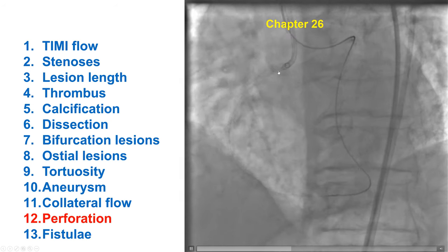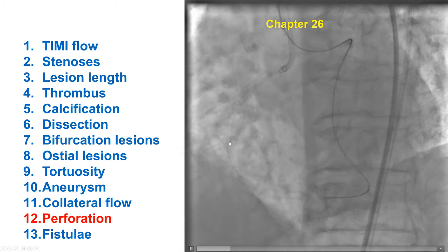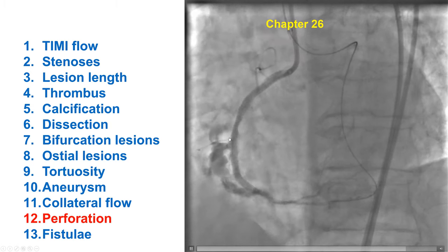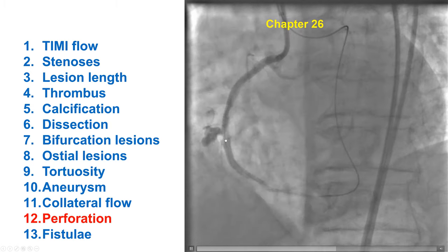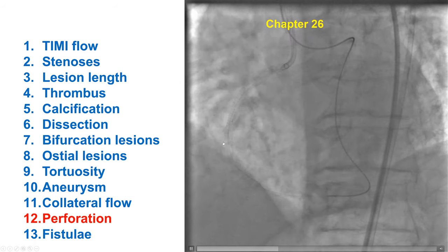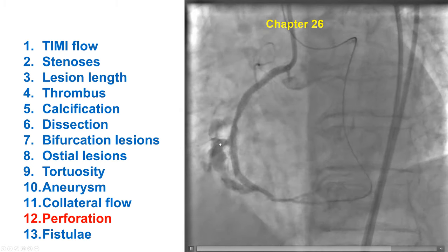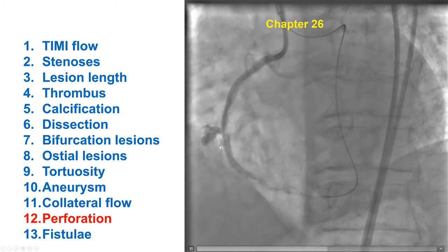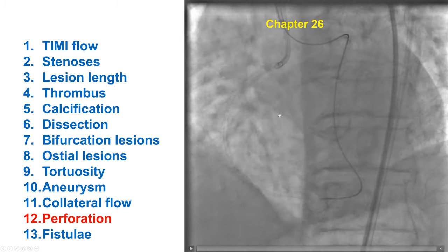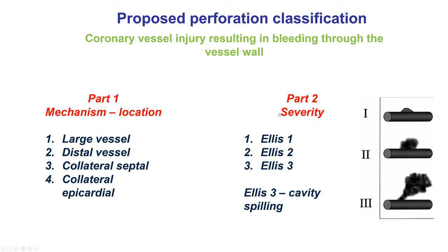Number 12 is perforation. Contrast should flow within the coronary artery and should not extravasate out. This is an example of a large vessel perforation in the mid-right coronary artery, which is critical to identify quickly during PCI because any delay can cause tamponade and be lethal. Different types of coronary perforations are classified by location and severity, discussed in detail in Chapter 26.